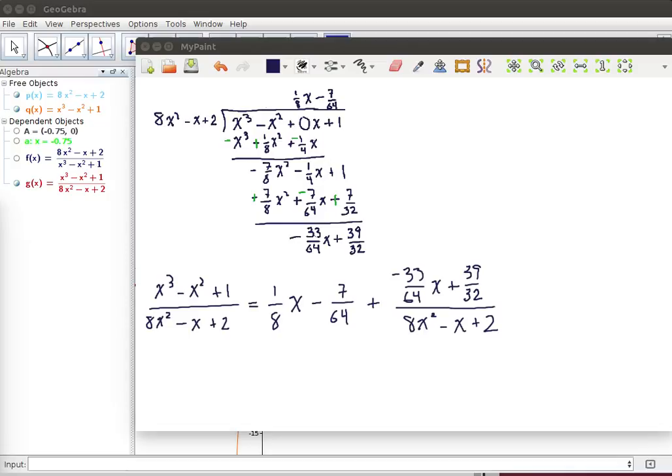Now as x gets very large, this denominator here becomes very large compared to this numerator, and consequently this fraction right here goes to 0. So this fraction goes to 0 as x goes to infinity.